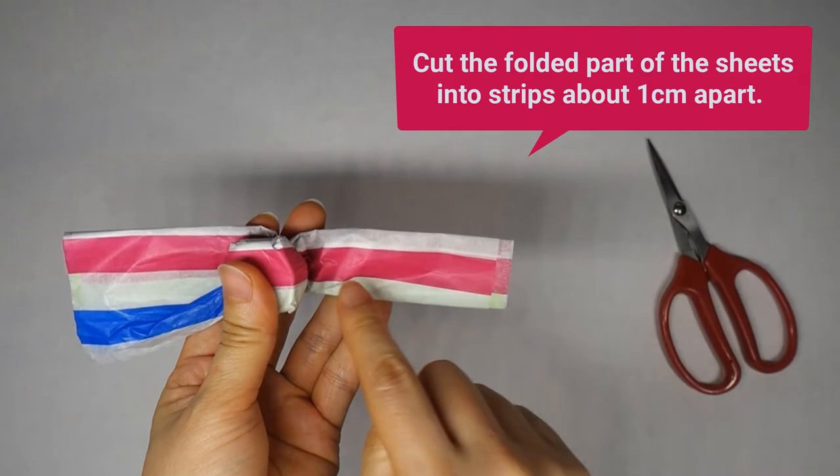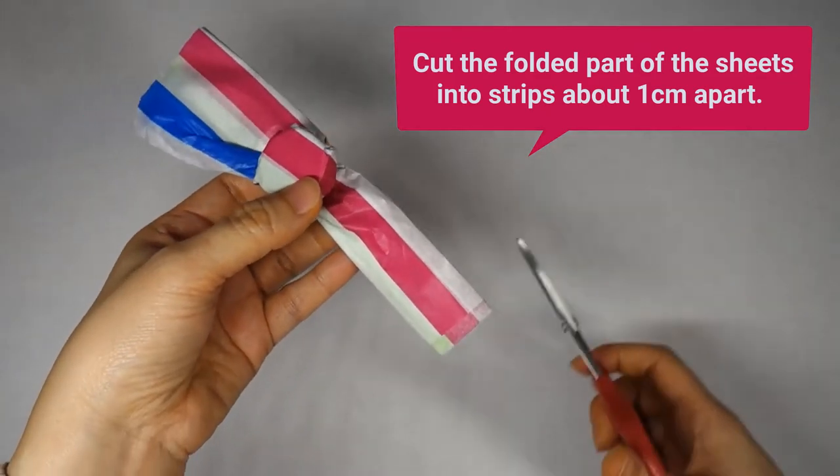Cut the folded part of the sheets into strips about one centimeter apart.